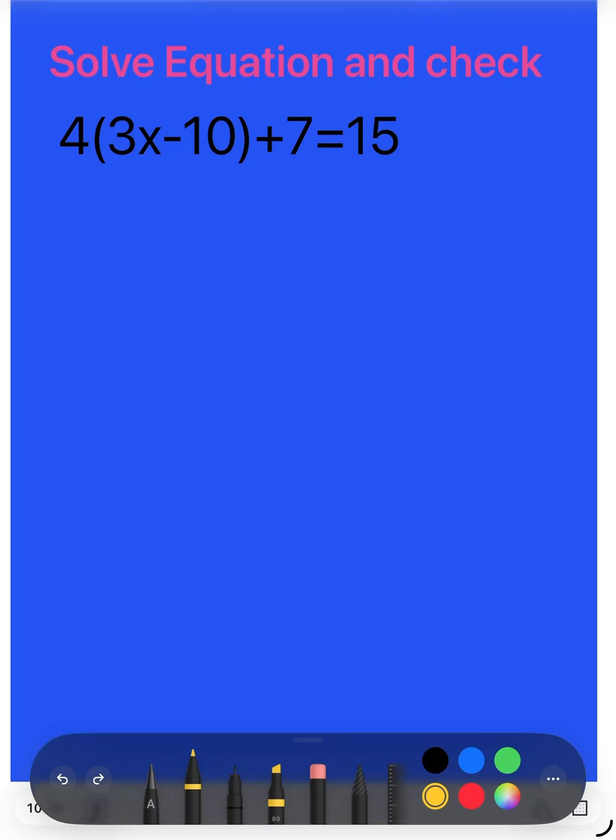Solve the equation and check. How we solve the equation? First, we have 4 multiplied by bracket 3x minus 10 plus 7 equals 15.